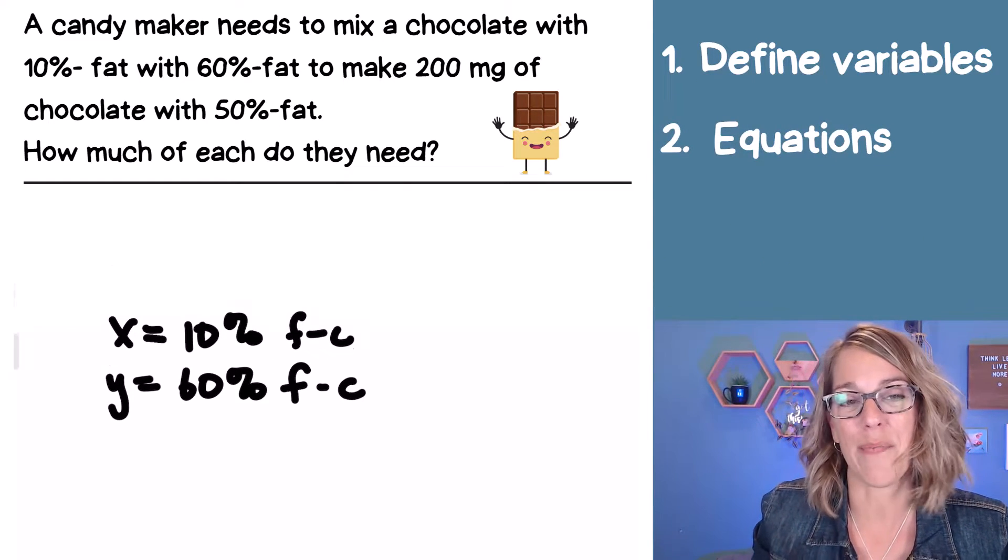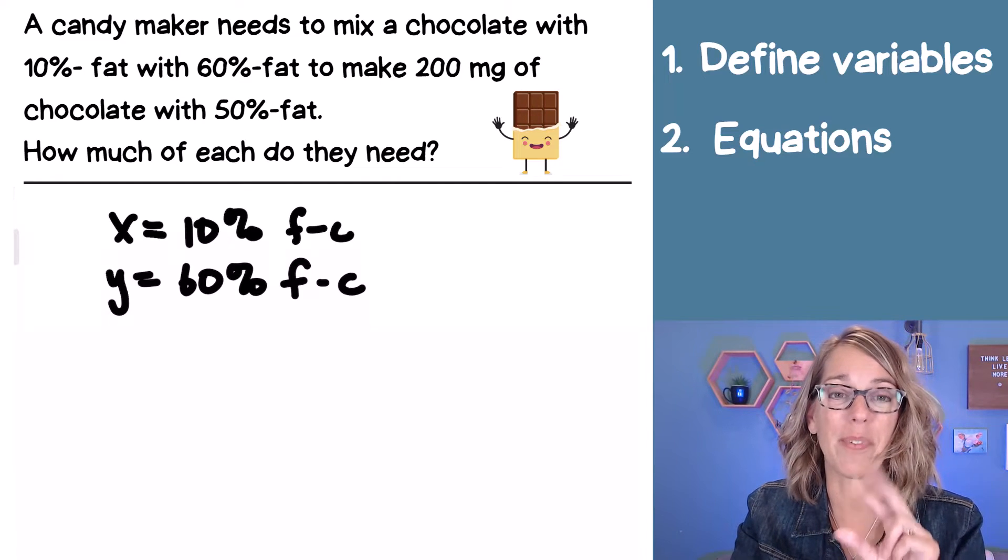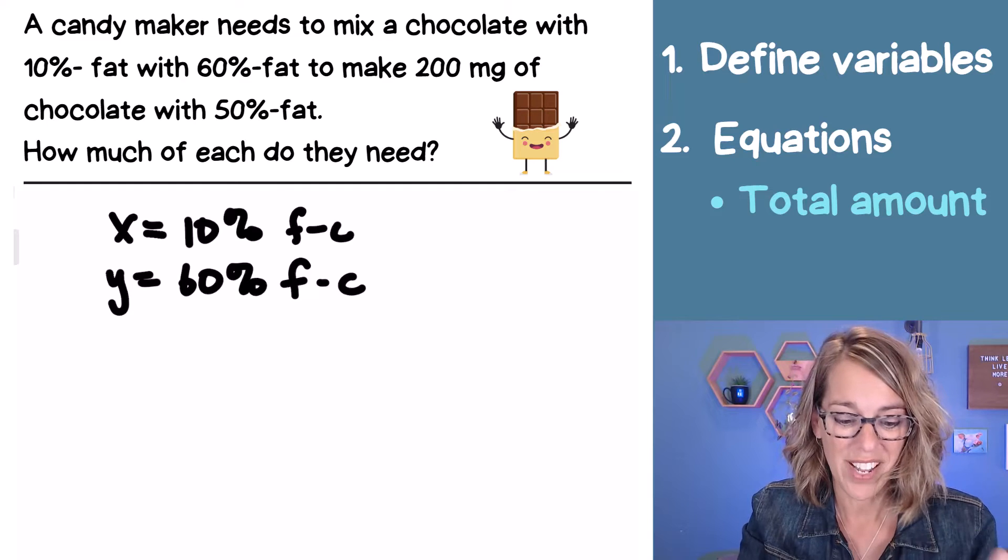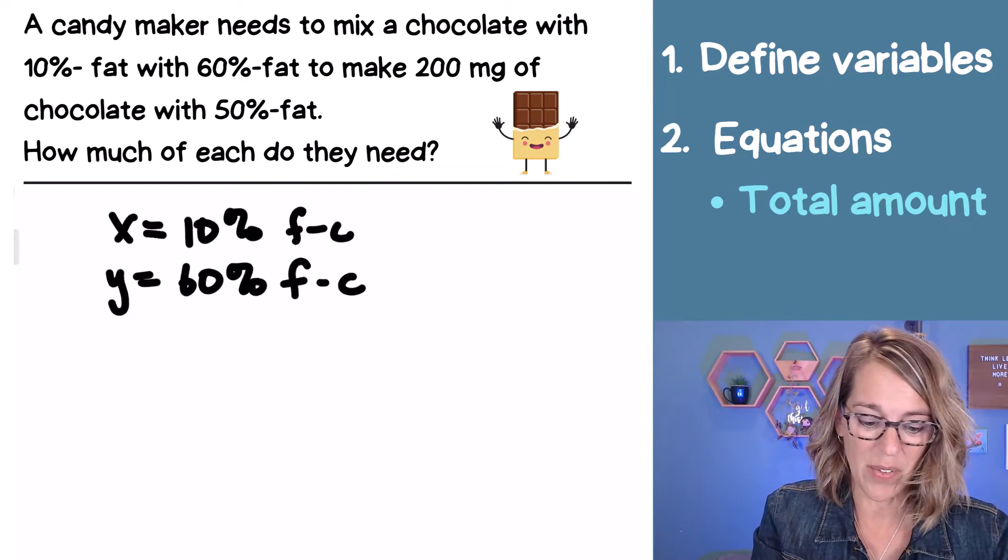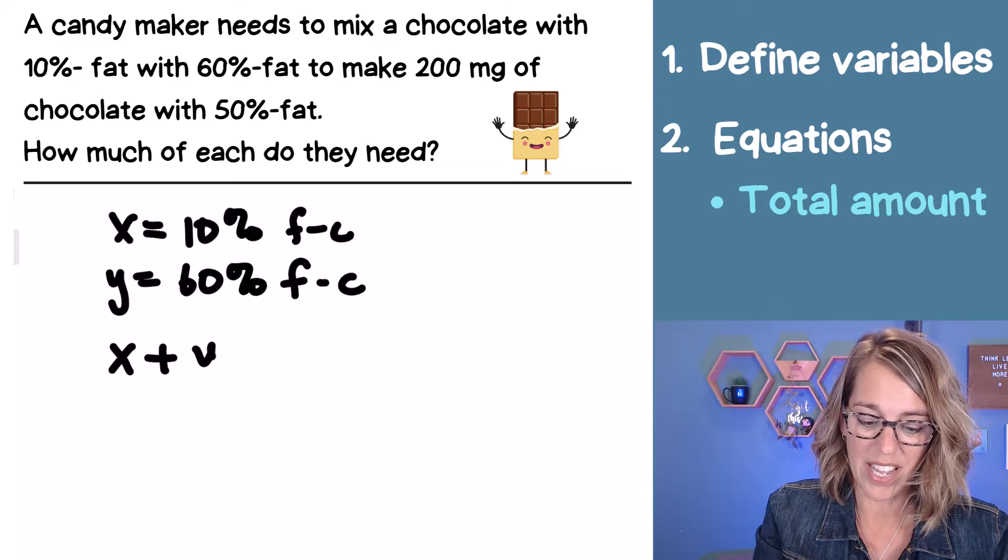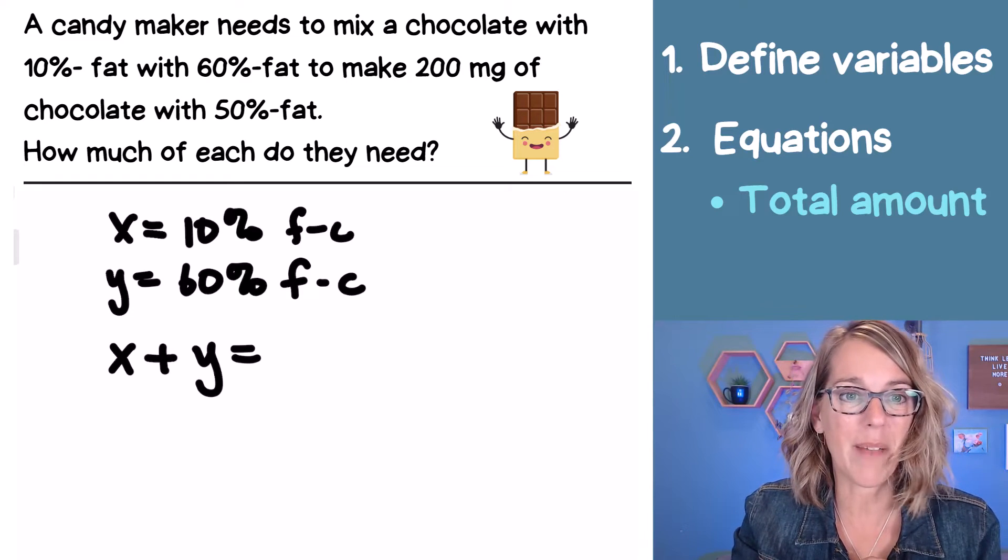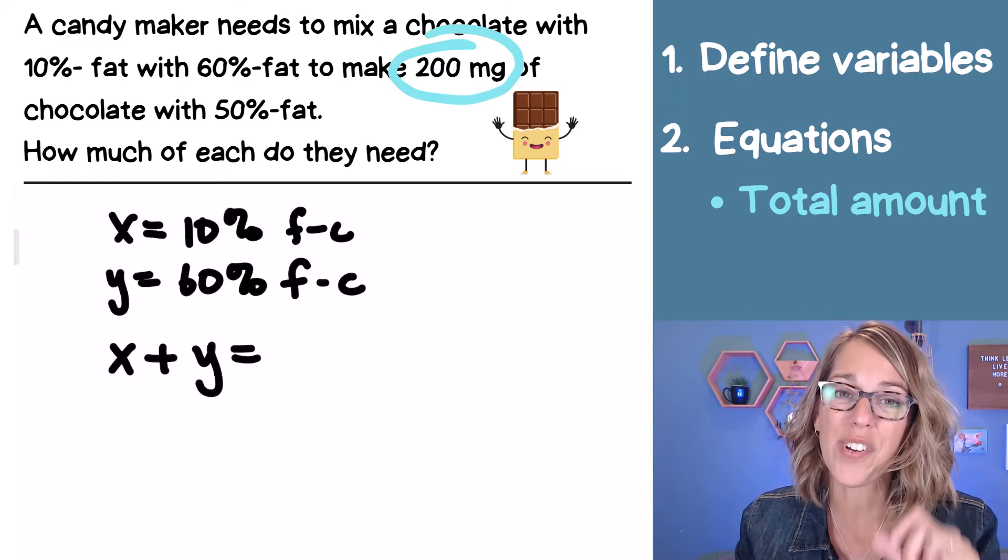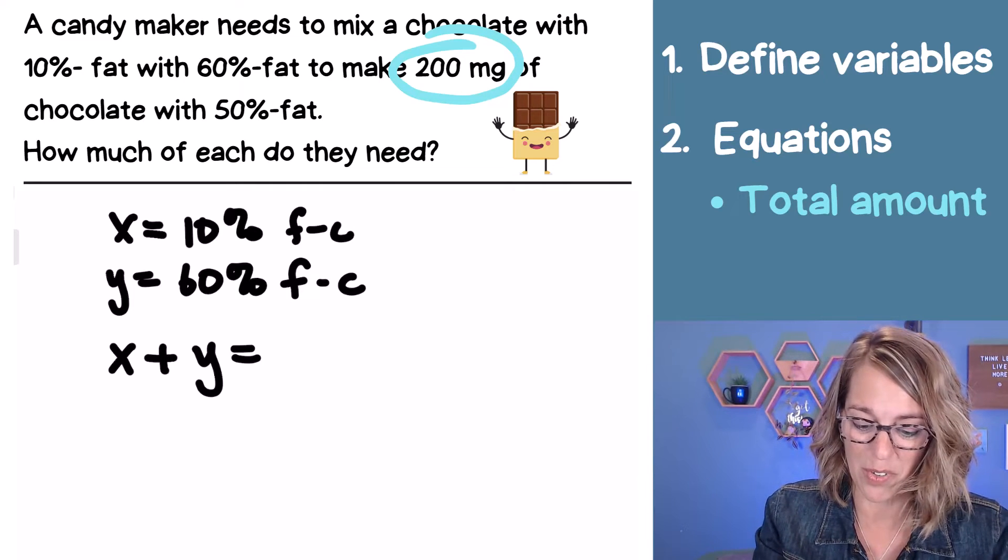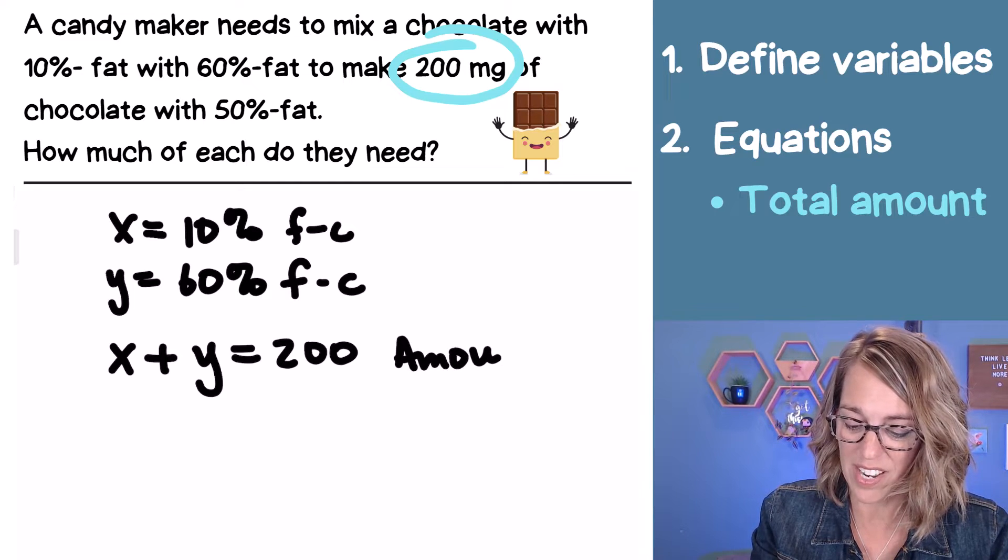So X is equal to the 10% fat chocolate. And then I'm going to let Y be the 60% fat chocolate. So I've got those two, and that means that I'm now ready for my equations. Every single time with these mixture problems, you're going to come up with two equations. The first one are the amounts. So I already have my X and Y. So I know that if I take the amount of the 10% chocolate plus the amount of 60% chocolate, I'm going to mix those together. And I'm going to come up with 200 milligrams total. So this is equal to 200 milligrams. So this is my amount equation.